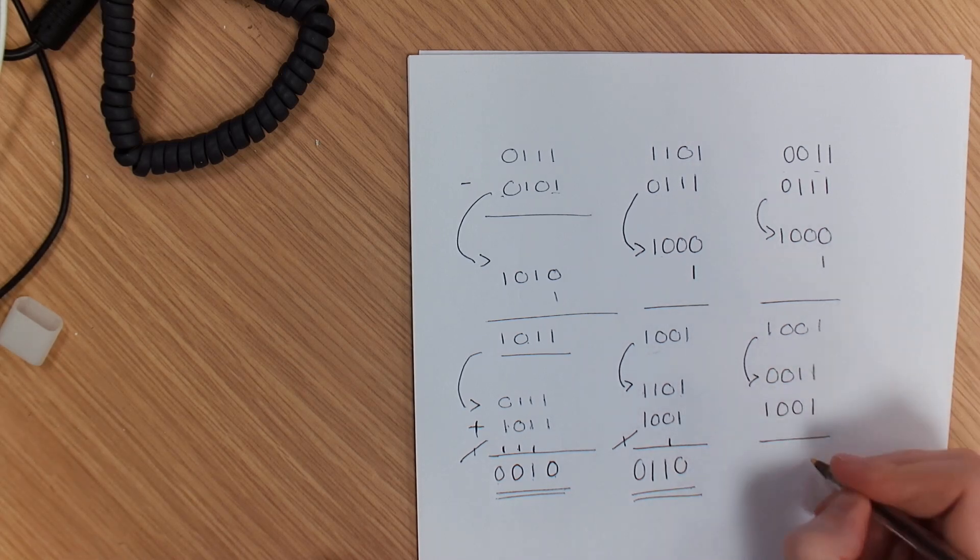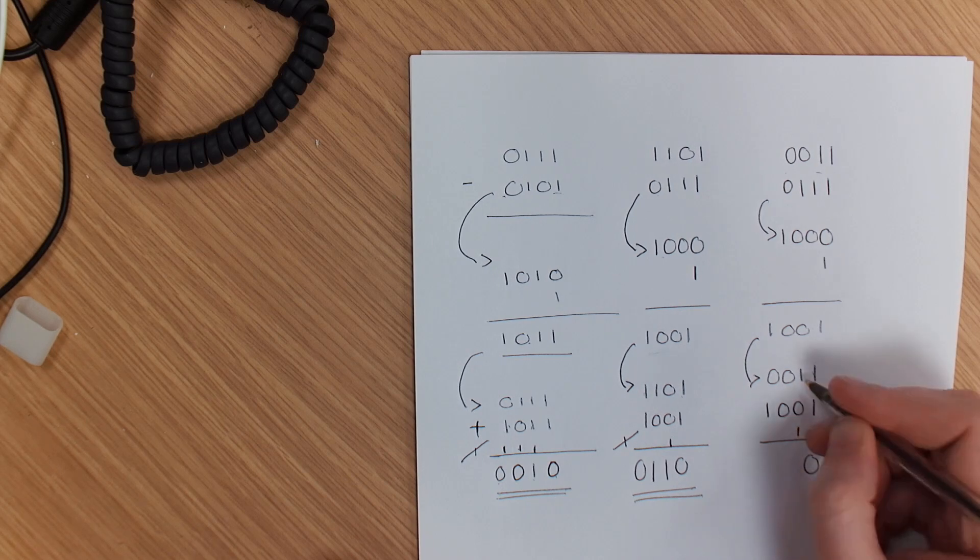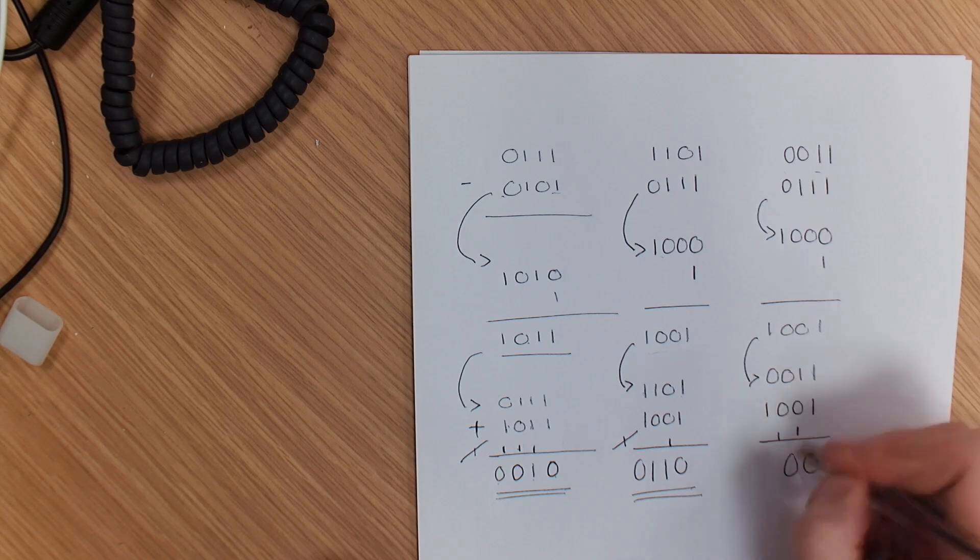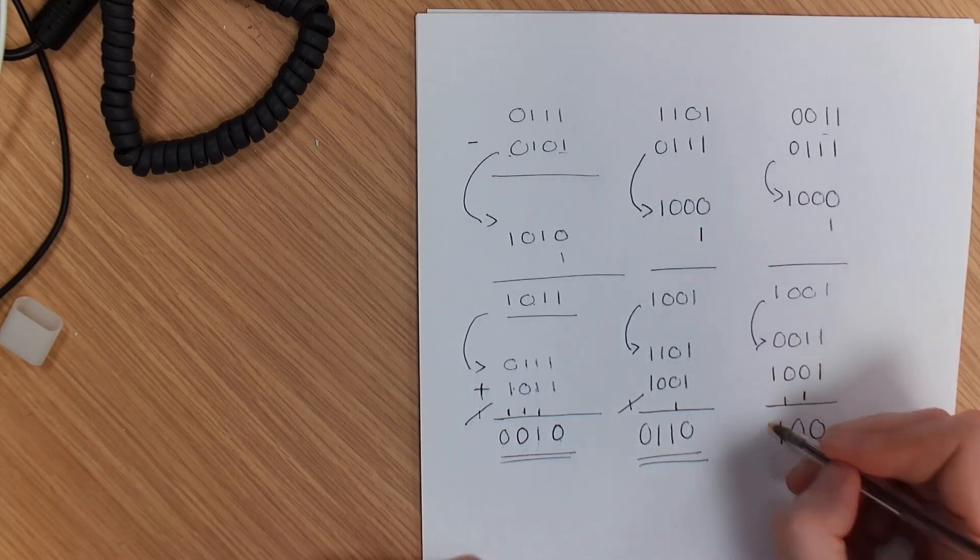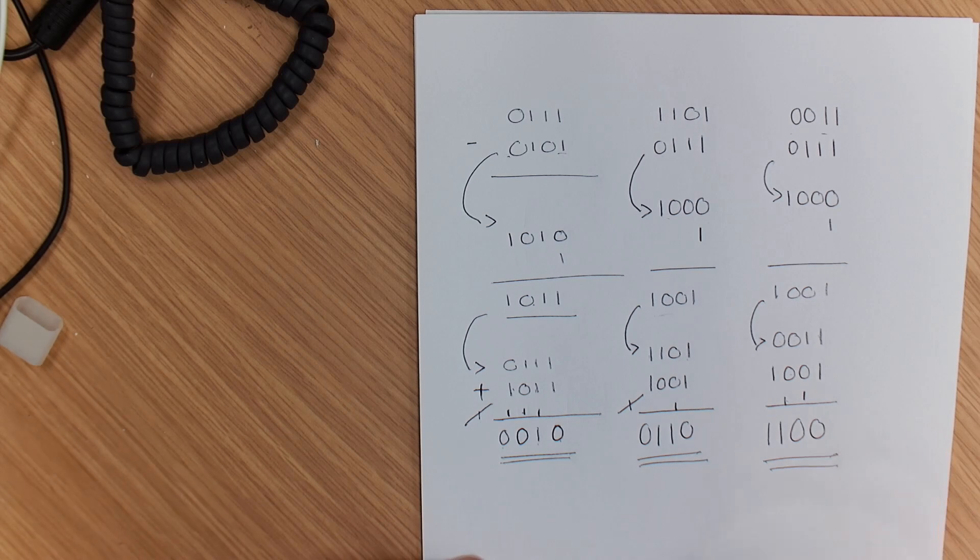1 plus 1 is 0, carry the 1. 1 plus 1 is 0, carry the 1. 0 plus 0 plus 1 is 1, 0 plus 1 is 1, and your answer should be 1100.